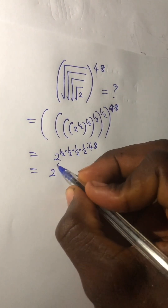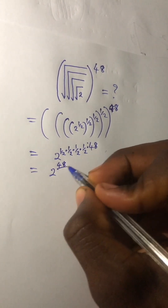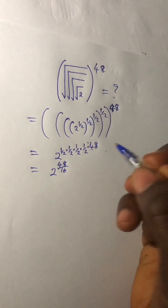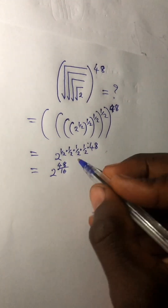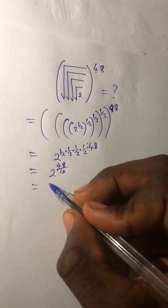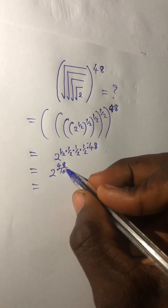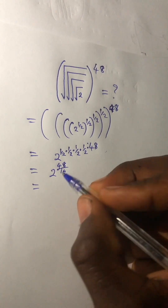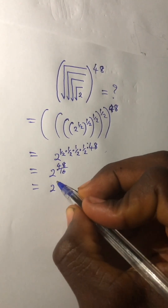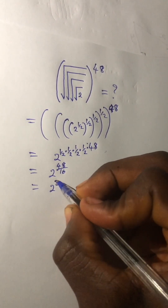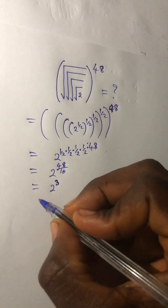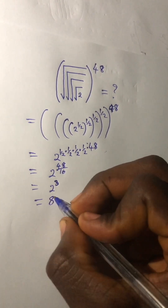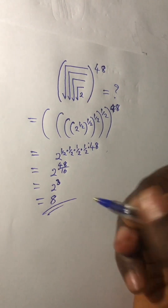That gives us 48 divided by 16 — 2 times 2 times 2 times 2 equals 16. 48 divided by 16 is 3. So we have 2 raised to the power 3, which is 8. Our answer is 8.